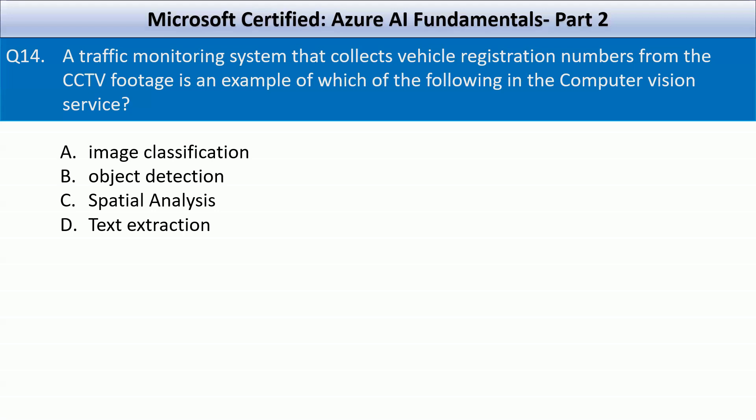Since the goal is to extract vehicle registration numbers from CCTV footage, text extraction using OCR algorithms would be the most appropriate choice. OCR algorithms can recognize and extract text information from images, making it possible to retrieve registration numbers from captured video frames.